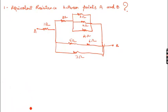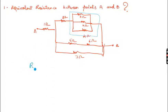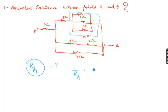You have to solve for the series resistances and parallel resistances to find the equivalent resistance. The first thing you can see is that you can solve the parallel resistances first. You have three parallel resistances: 3Ω, 4Ω, and 4Ω. Let me call this RP1. So: 1/RP1 = 1/3 + 1/4 + 1/4. RP1 comes out to 1.2Ω.